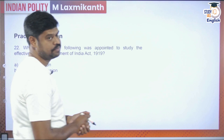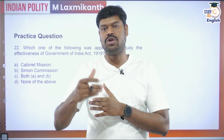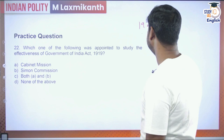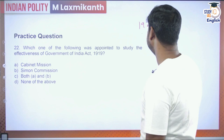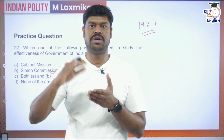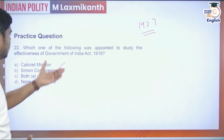Question 22: Which commission was appointed to study the effectiveness of the Government of India Act 1919? The GoI Act 1919 mandated that after 10 years a commission would review its functioning. In 1927 the Simon Commission was appointed for this purpose. Based on the Simon Commission's report, the British government held round table conferences with Indian representatives, and the Government of India Act 1935 was subsequently passed. Answer: option B, the Simon Commission.